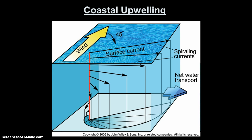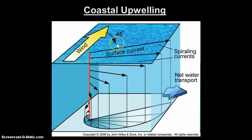So, coastal upwelling. Before we dive into coastal upwelling, we will just recap Ekman transport. We talked about the Ekman spiral — how the wind, interacting with Coriolis, causes a spiraling effect in the transport of water — but the net transport of the water is 90 degrees to the right of the wind in the northern hemisphere.